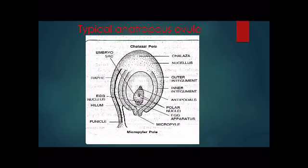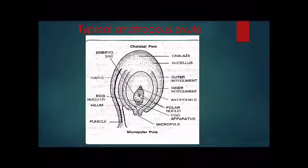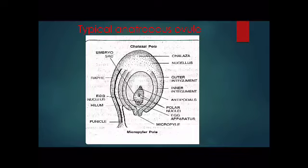This is an anatropous ovule, which is called a Megasporangium. So Megasporangium mainly represents the ovule, and this is an anatropous ovule. Typical ovules — most plants have this type — but there are various different types which we will discuss in another video. Right now just focus on the anatropous ovule.